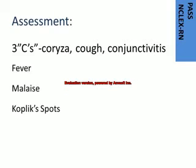Assessment findings include fever, malaise, coryza, cough, and conjunctivitis. A rash appears as red erythematous maculopapular eruption starting on the face and spreading downward to the feet. It blanches easily with pressure and gradually turns a brownish color, lasting 6 to 7 days. Koplik's spots — small red spots with a bluish-white center and red base — are located in the buccal mucosa in the last 2 days before the rash.